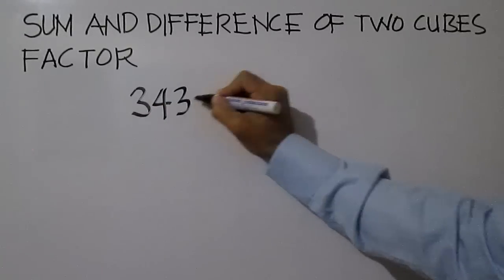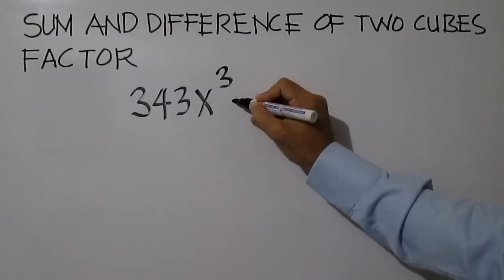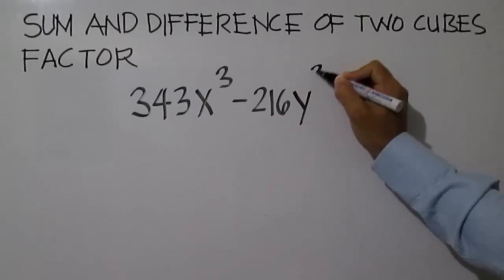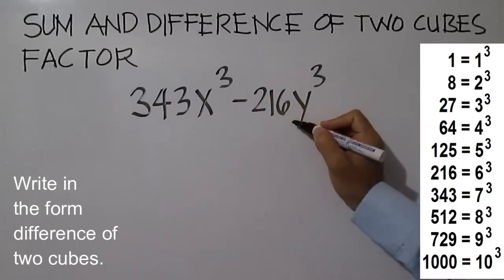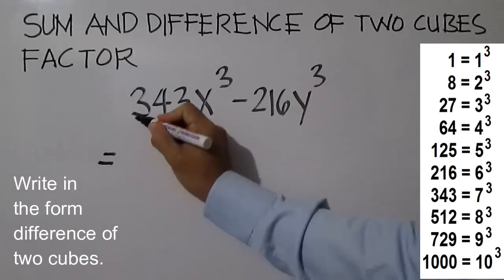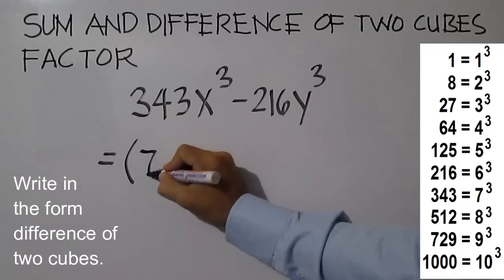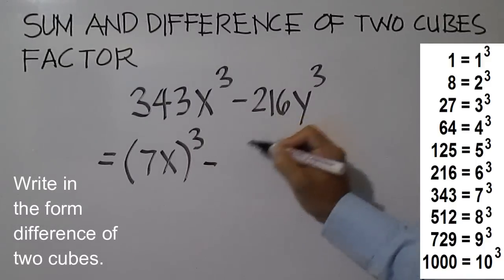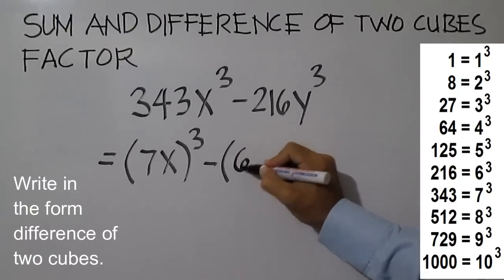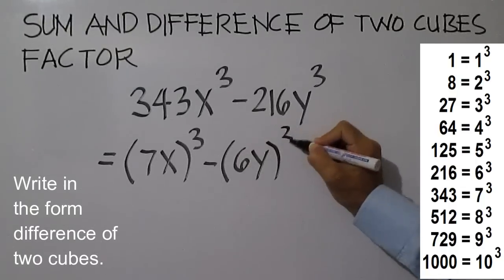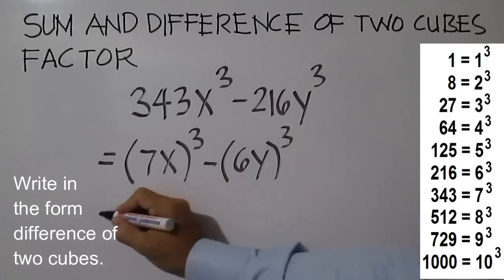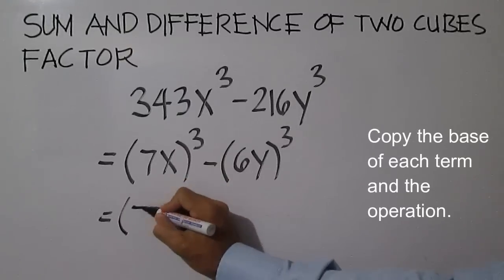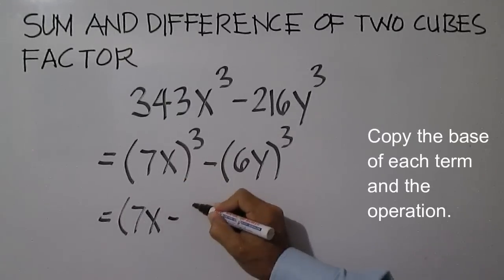Factor 343x cubed minus 216y cubed. This is difference of two cubes. Write in the form difference of two cubes: 7x quantity cubed minus 6y quantity cubed. Copy the base and the operation: 7x minus 6y.